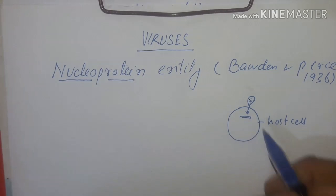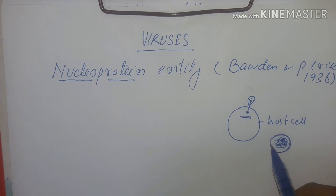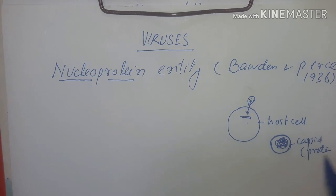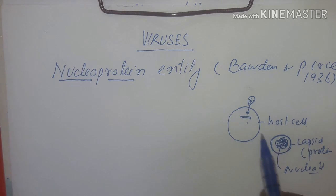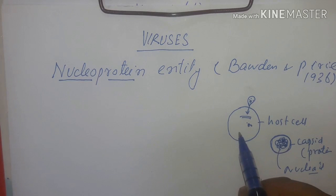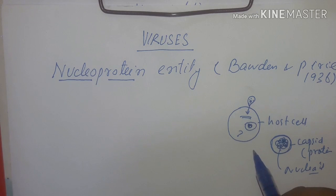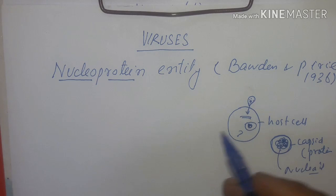Multiplication involves synthesis of parts followed by their assembly. Inside the host cell, the virus synthesizes its nucleic acid and its capsid. After synthesizing the requisite material, assembly takes place — the nucleic acid is assembled within the protein coat. This is called multiplication followed by assembly.